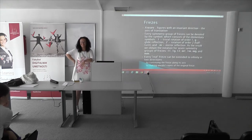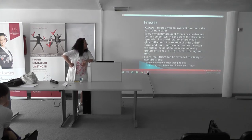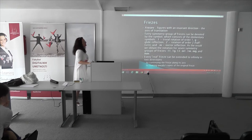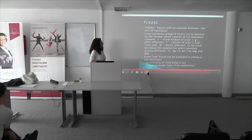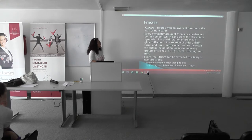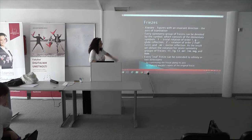Now friezes. Friezes are figures that have an invariant direction — this is the axis of the translation. Every symmetry group of friezes can be denoted by a symbol. This symbol consists of elementary symbols: '1' is for translation of order one, 'G' is for glide reflection, '2' is for rotation of order two or half-turns, and 'M' is for mirror reflection. As a result, we can get the crystallographic notation for the symmetry group of friezes.